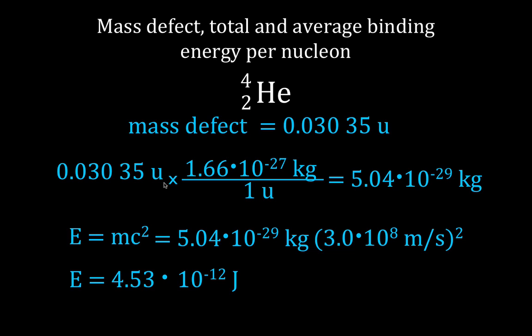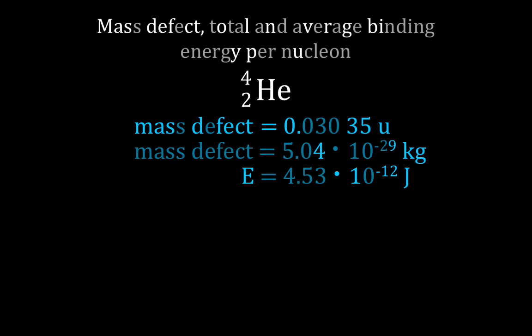Now, that's in joules. You can see we went from mass in atomic mass units, to mass in kilograms, then converted using Einstein's equation to energy in joules. But we like to give the energy in electron volts or mega electron volts. So here's our previous information: mass, mass, energy in joules.